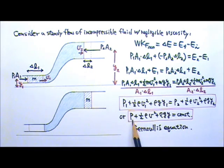Or we can say P plus one-half rho V squared plus rho gy is a constant. These two are called Bernoulli's equation.